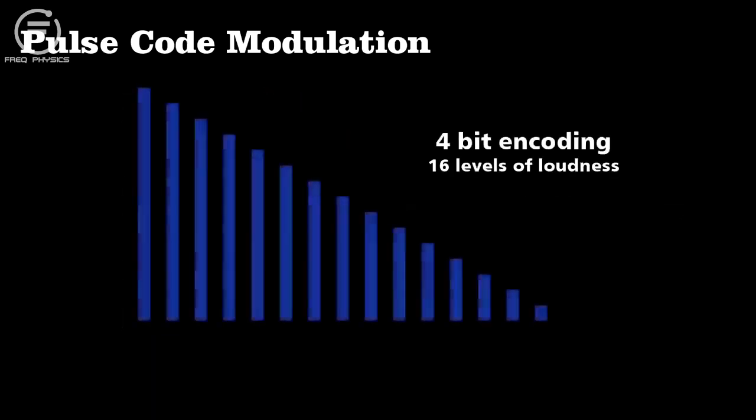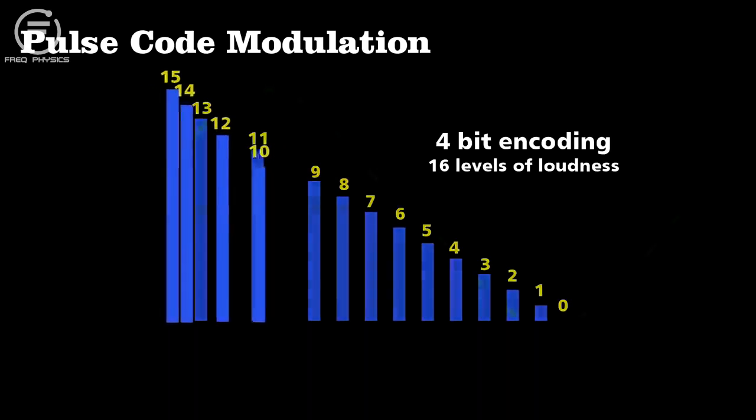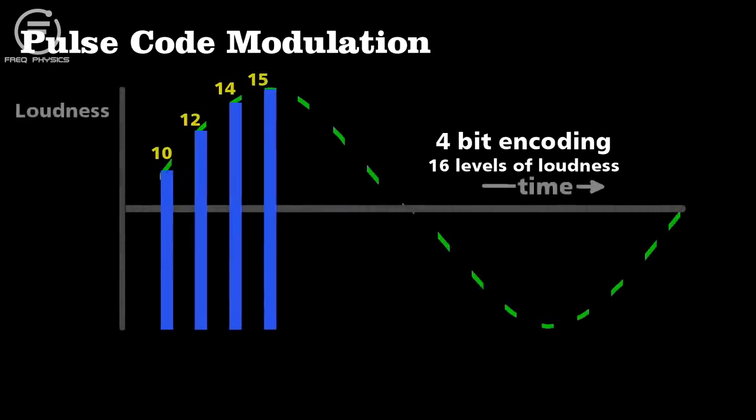We want to make this a digital signal, which means discrete values of loudness and not just any value. For example, I'll use four bits, which means I have 16 possible values for the loudness. So the first four sections of the signal could be approximated by about 10, 12, 14, and 15.